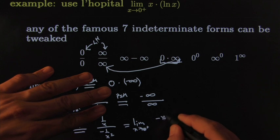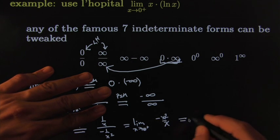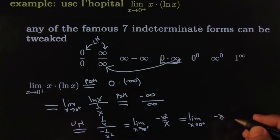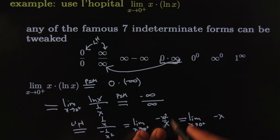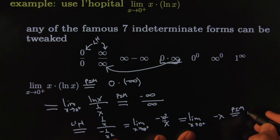Rewrite it. That becomes negative x squared over x, which I can clean up as just the limit as x goes to zero from the positive side of negative x, because I cancel one of these x's. And then I try the plug-in method again. The plug-in method, of course—I'm plugging zero from the right, that gives me zero. And voilà!